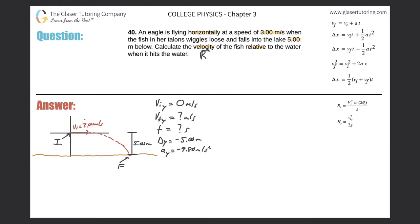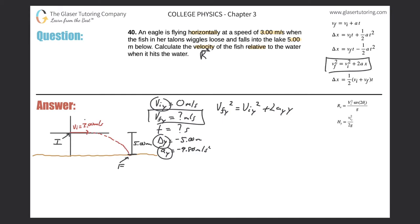Since we know the initial y-velocity, the displacement, and the acceleration, we choose equation 4: v_yf² = v_yi² + 2·a_y·Δy. Plugging in: v_yf² = 0² + 2·(−9.80)·(−5.00). Two times negative 9.8 times negative five gives us 98, so v_yf² = 98.